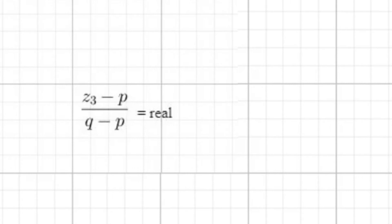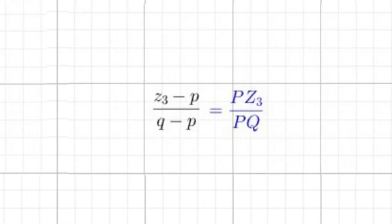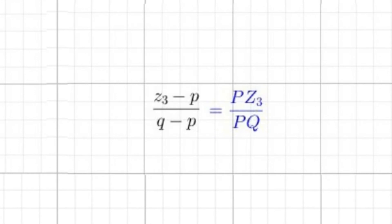Additionally, since we just proved P, Q, and Z to be collinear, we know that the ratio of Z3 minus P over Q minus P equals the ratio of PZ3 over PQ. This makes intuitive sense, but we can also visualize it with vectors.